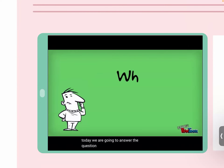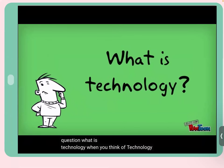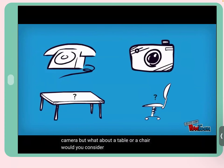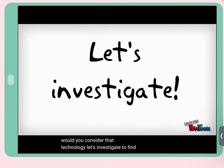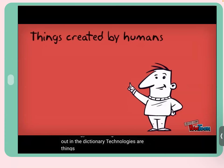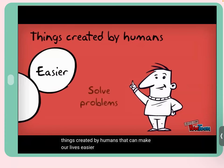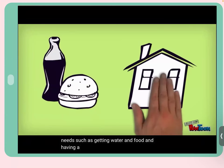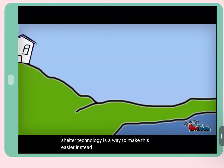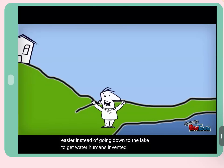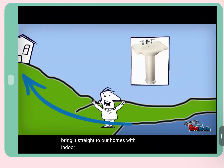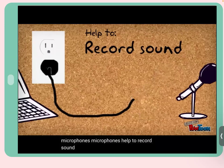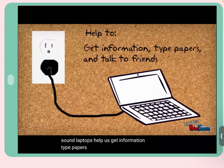Video: What is technology? When you think of technology, you might think of a telephone or camera. According to the dictionary, technologies are things created by humans that can make our lives easier or solve problems. For example, instead of going to a lake for water, humans invented indoor plumbing. Technologies with wires include microphones and laptops, which help us record sound, get information, and communicate.